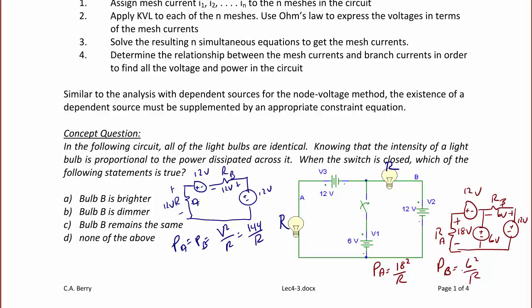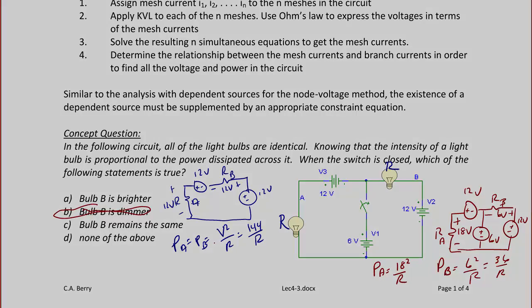So when the switch is closed, which of the following statements is true? Bulb B is brighter? That's not true because it actually went from 144 over R to 36 over R, so it's dimmer. Bulb B is dimmer — that is indeed true because it went from 144 over R to 36 over R. Bulb B remains the same? That's not true. And none of the above? So the answer for this problem is letter B.